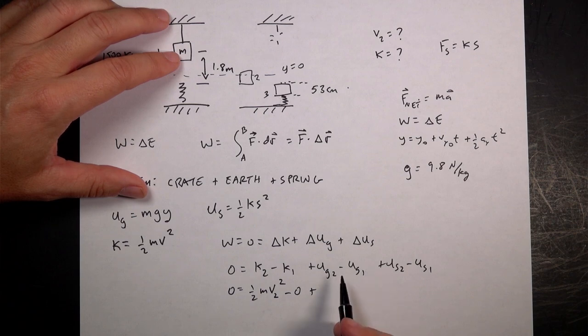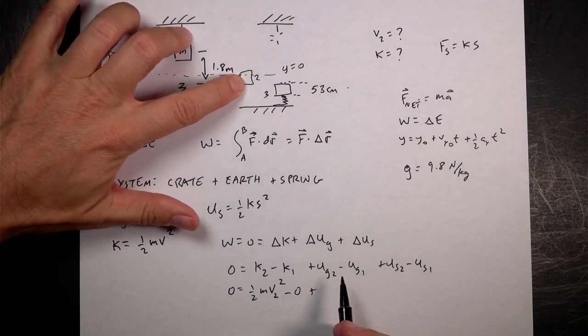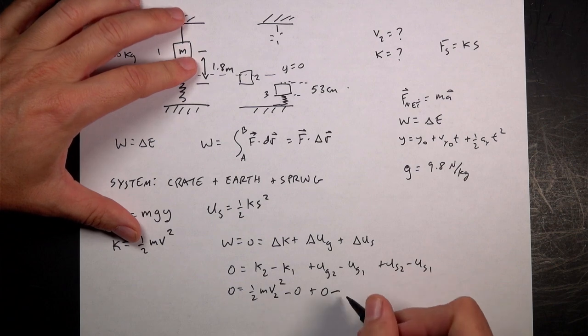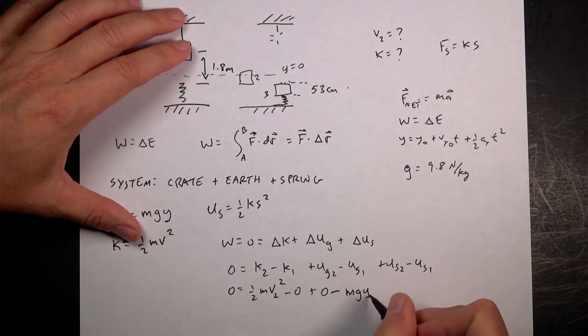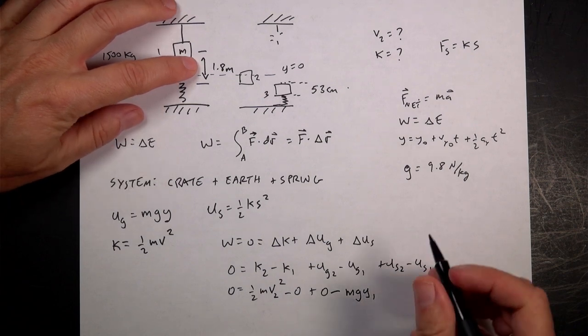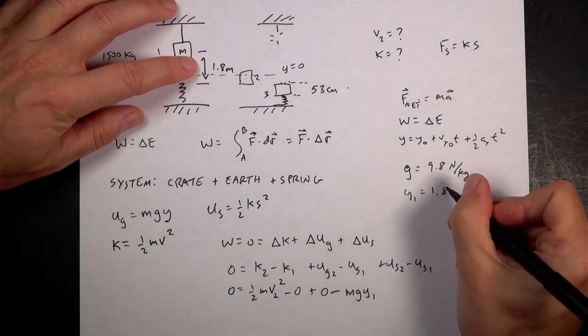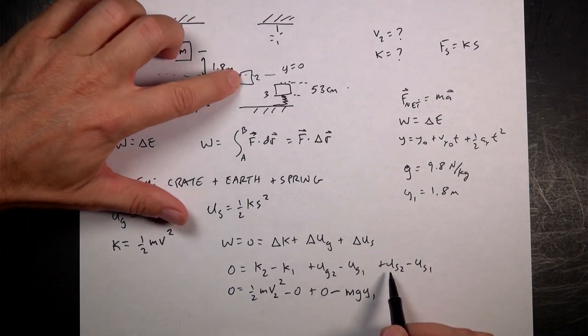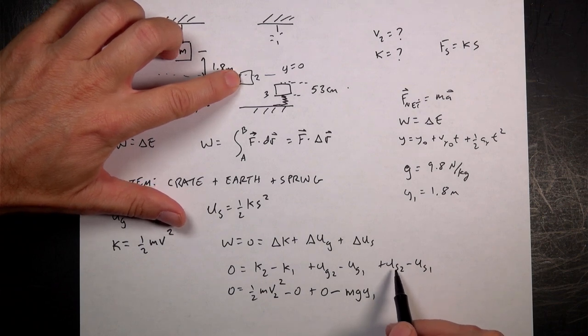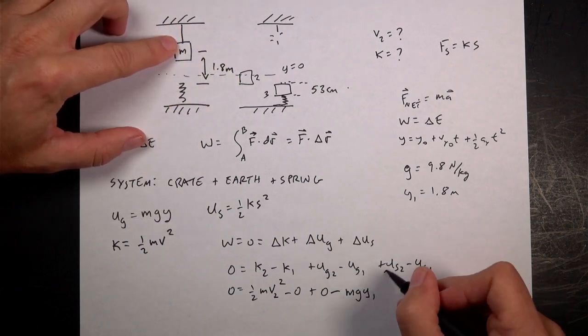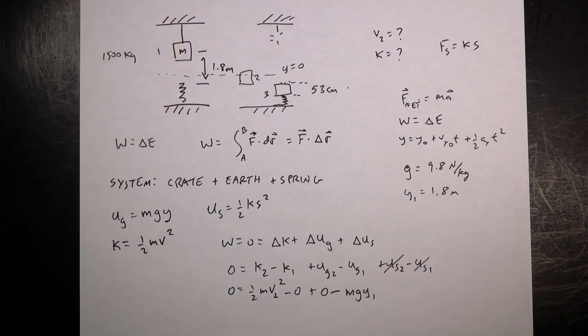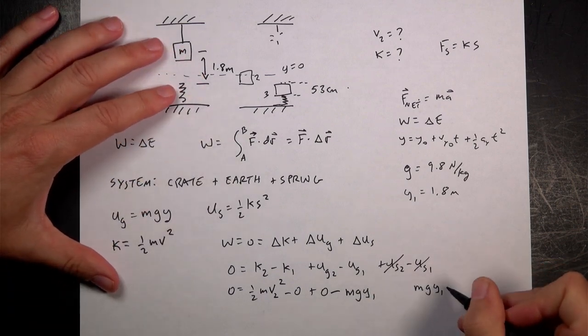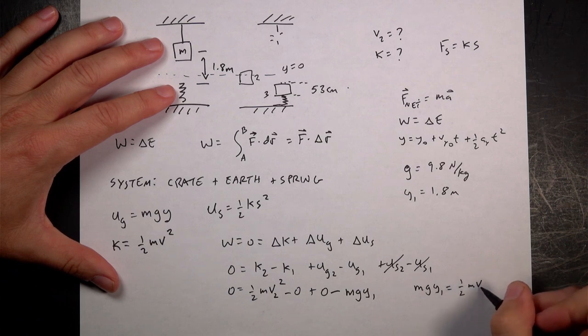So I have zero equals k2 minus k1 plus u g2 minus u g1 plus u s2 minus u s1. Now some of these are zero. First, I'm going to pick where is y equal to zero, and I'm going to call this y equals zero. So k2 is one-half m v2 squared, and that's one of the things we're trying to solve for. k1 is zero. u g2 is going to be zero because I picked that to be zero. Minus u g1, which is going to be m g y1, and y1 is going to be this 1.8 meters. The spring potential terms are both zero.